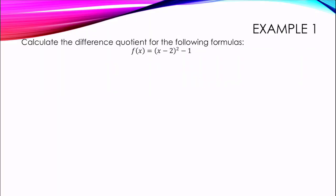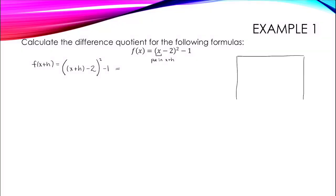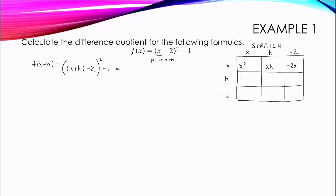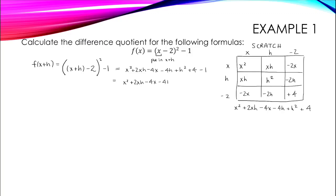Let's apply this to some examples. For our first example, we are calculating the difference quotient for f of x equals x minus 2 squared minus 1. For our first step, we write out the formula for f of x plus h by replacing every x in the formula with x plus h. Now we simplify by expanding. Notice how our quantity x plus h minus 2 is being squared. I like to use an area diagram to keep track. When we multiply out term by term, we get x squared, xh, negative 2x, xh, h squared, negative 2h, negative 2x, negative 2h, plus 4. This simplifies to x squared plus 2xh minus 4x minus 4h plus h squared plus 4. Remembering the minus 1, f of x plus h is x squared plus 2xh minus 4x minus 4h plus h squared plus 3.